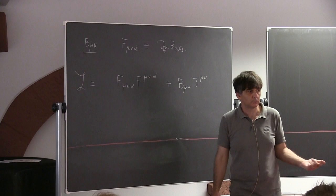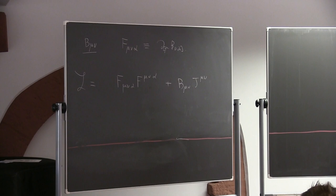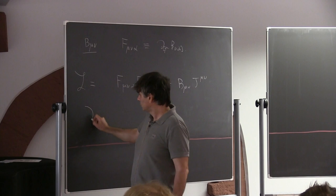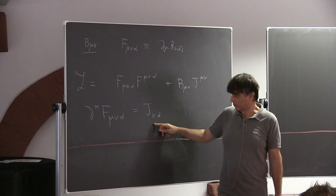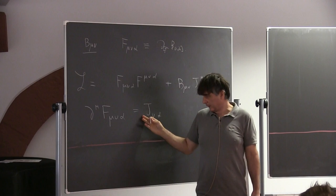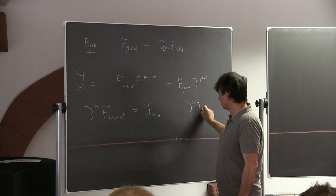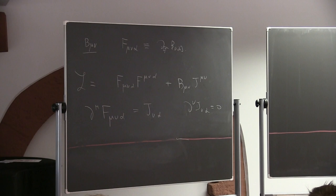We want to investigate this theory: what does it describe, how many degrees of freedom does it propagate? We go to the equation of motion, which is pretty similar to Maxwell. Taking the divergence of the equation of motion — the source has to be anti-symmetric — we can see that the source has to be conserved. So again, the source has to satisfy conservation.